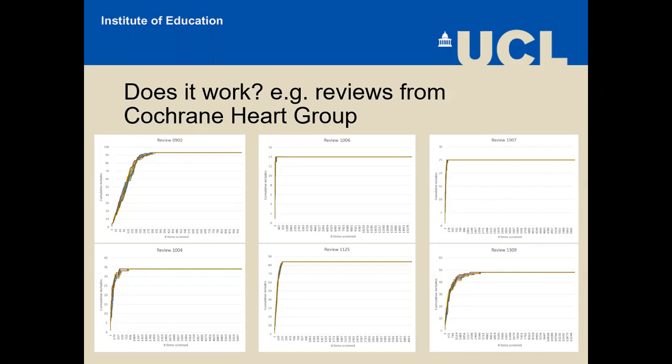There's a question from Connor: what features do the machine learning algorithms use? Without getting too much into the technicalities, for this process we tend to use support vector machines as the machine learning classifier, and we use the titles and abstracts. We tokenize those and take unigrams, bigrams, and trigrams — individual words, pairs of words, and triplets of words — and those are what we use to train the machine learning.